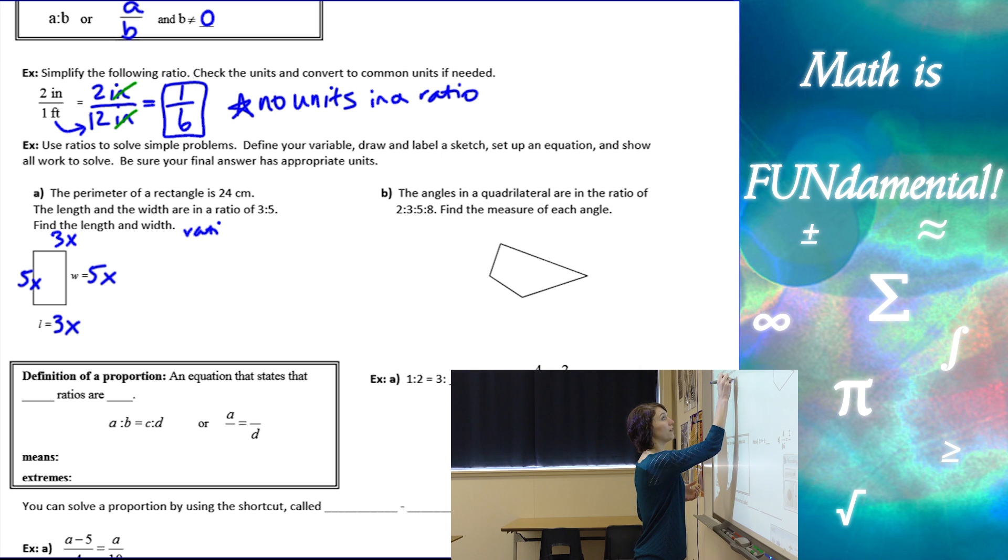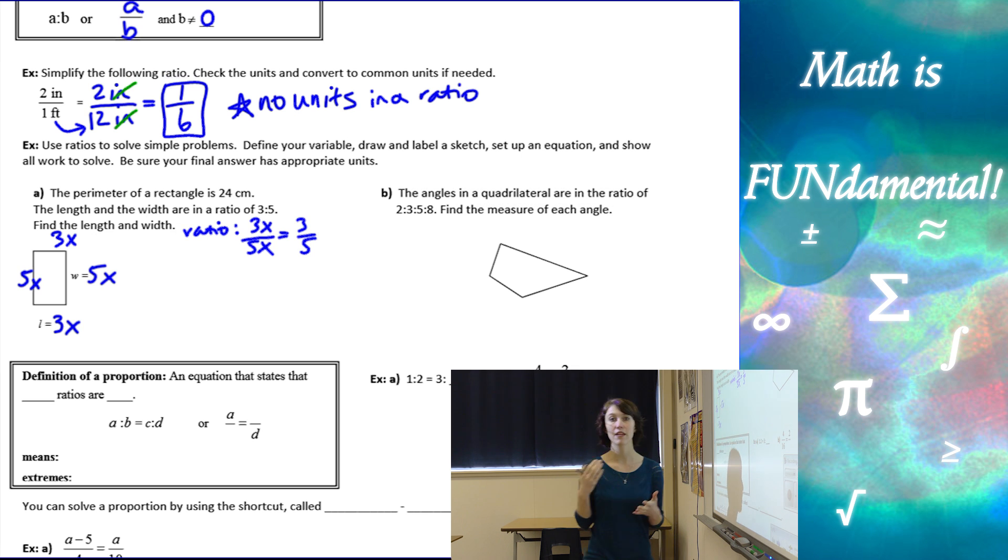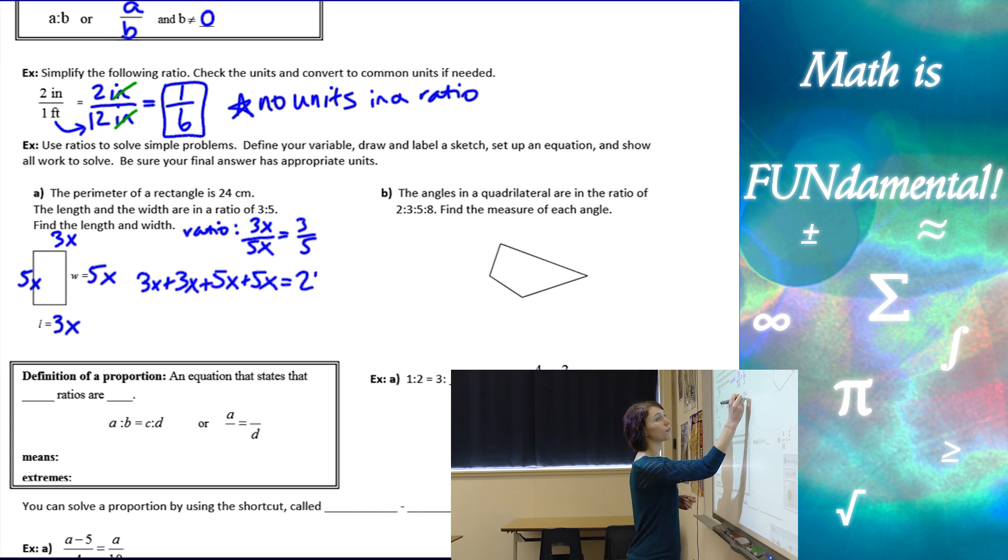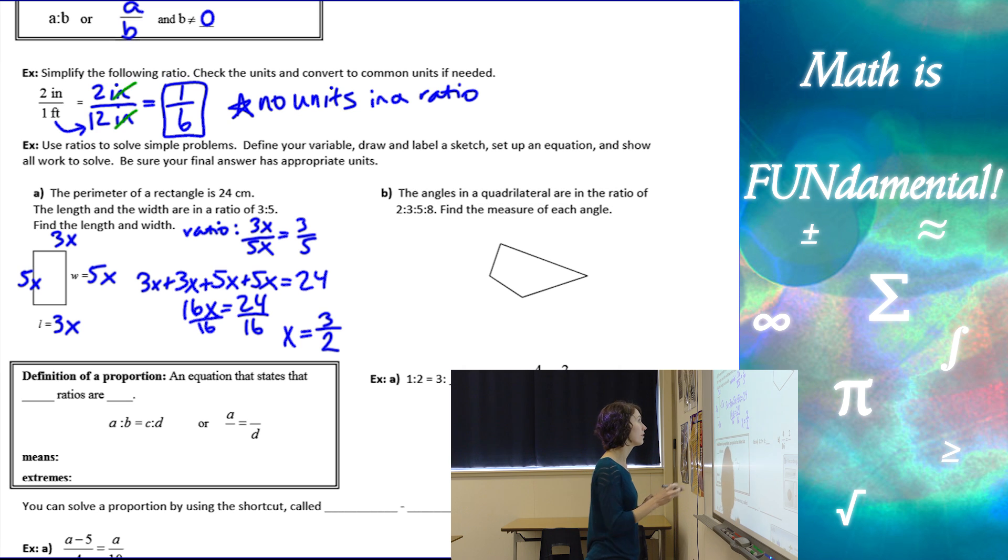If we think about the ratio, if I have length to width 3x over 5x, as long as x's are the same, they cancel out and we still have a ratio of 3 to 5. Adding x doesn't mess up our ratio, but it gives us a way to solve for what those lengths need to be. So now I can set up my equation: 3x plus 3x, because there's two lengths, plus 5x plus 5x have to be 24 for our perimeter. 16x equals 24, and then dividing by 16 and simplifying, we get x has to be 3 over 2 or 1.5. Then if we want to find the length and the width, the width would be 5 times 3 halves, which is 15 over 2 or 7.5. The length would be 3 times 3 halves, which is 9 over 2 or 4.5.